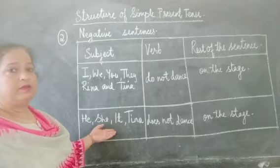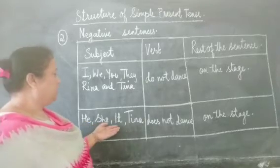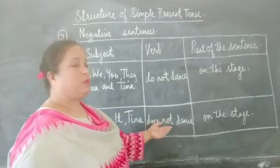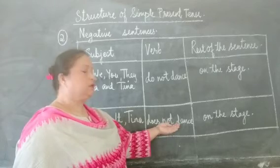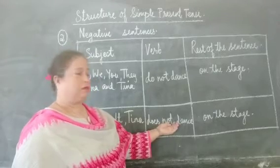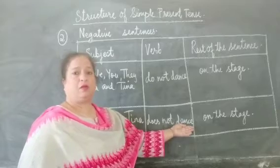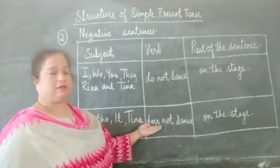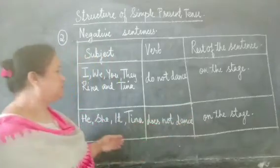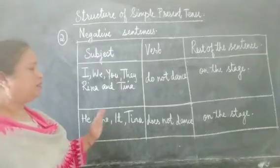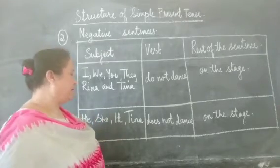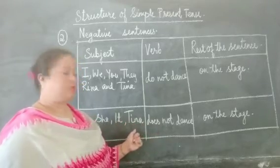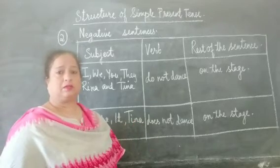But when the subjects are he, she, it, or a singular name, we use 'does not' before the base form of the verb — we do not add S to the verb in this case. For example: 'He does not dance on the stage,' 'She does not dance on the stage,' 'It does not dance on the stage,' 'Tina does not dance on the stage.'